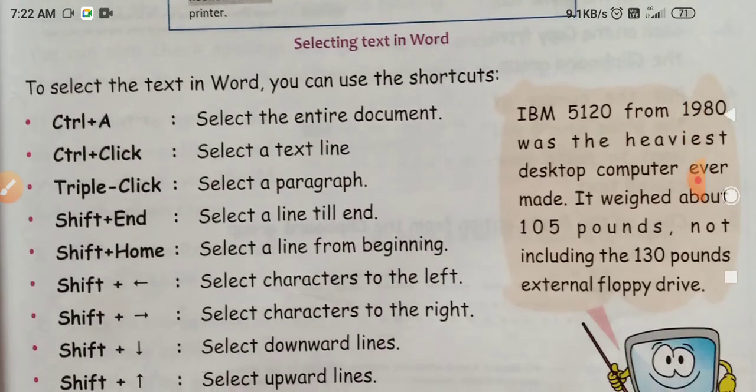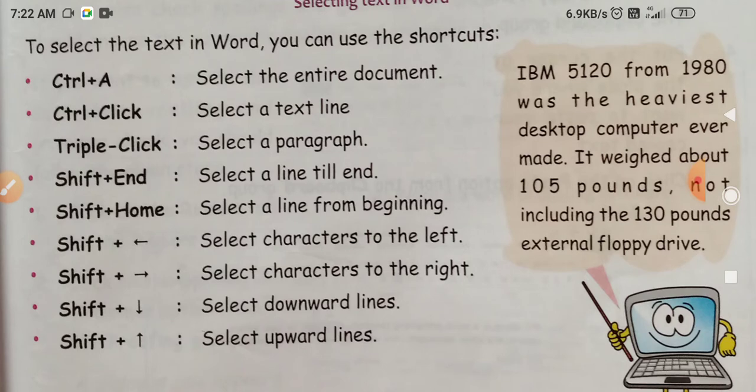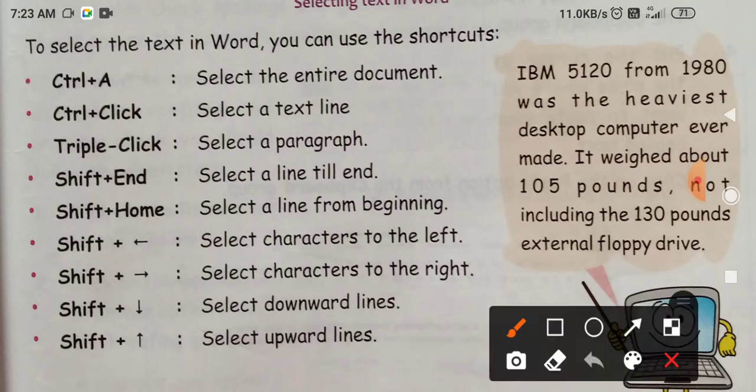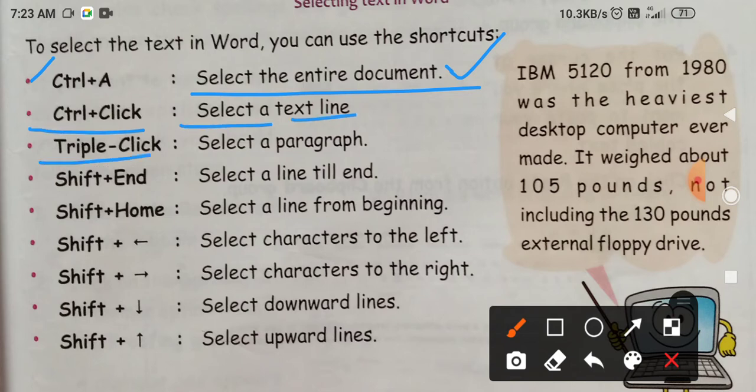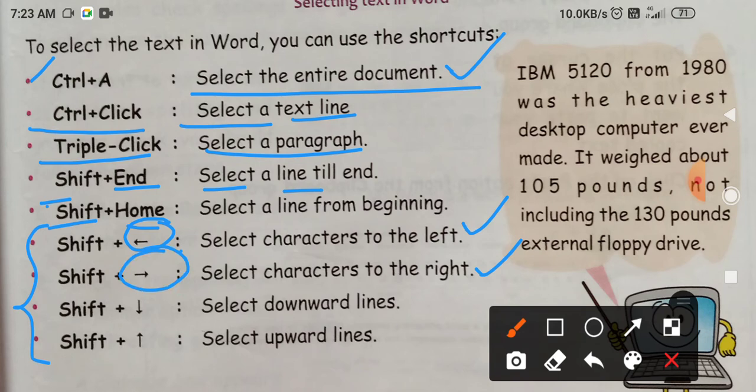Next, to select the text in Word you can use shortcuts. Control A selects completely all the text in the document. Shift Home selects a line from beginning. Shift arrow key, it means left arrow key, selects left. Shift right arrow key selects right. Shift down arrow key selects downward, and shift up arrow key selects upward.